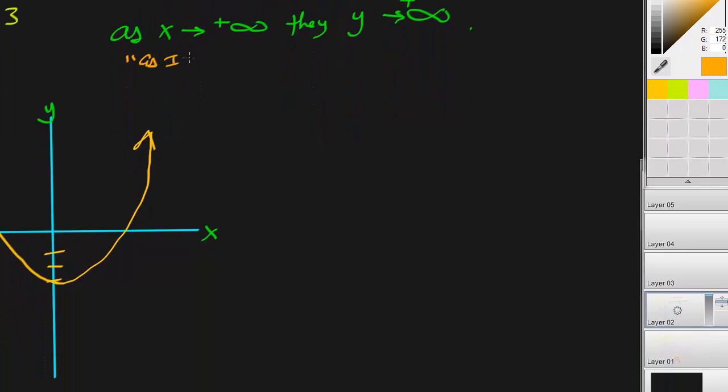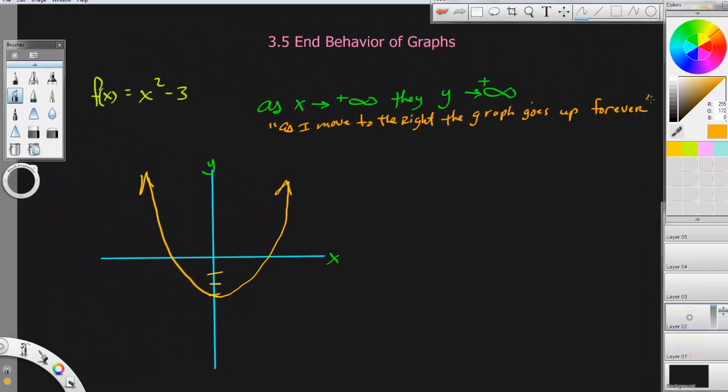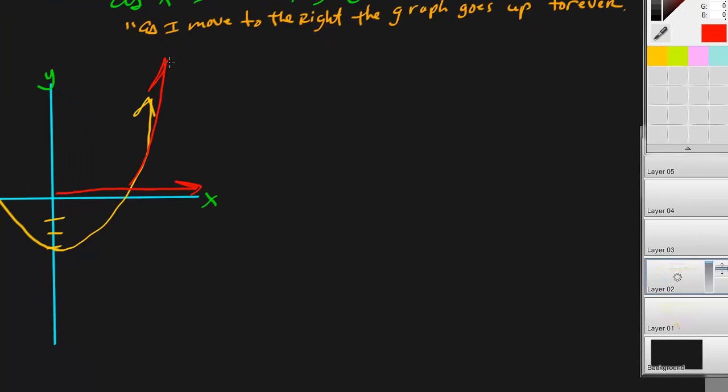As I move to the right, the graph goes up forever. Now that would be a common sense kind of saying, as I move to the right this way, this graph goes up forever.